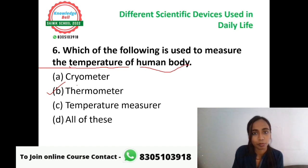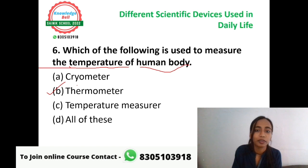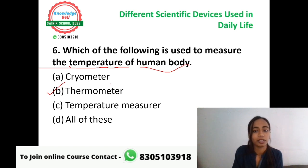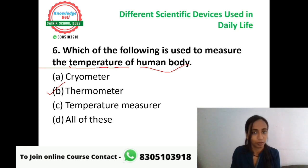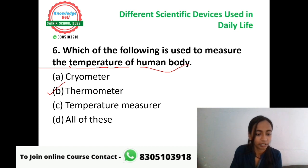Cryometer is used in polar areas and the Atlantic region to measure temperatures like minus one, minus two degrees. But to measure the temperature of a human body or any animal, the device used is the thermometer. So option B, thermometer, is the correct answer.